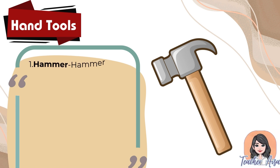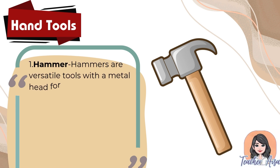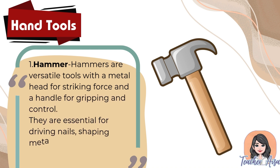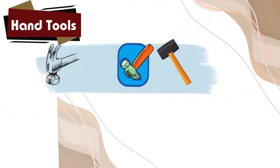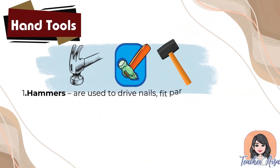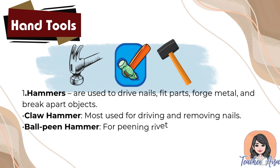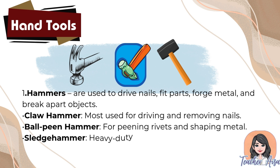First from the hand tools is the hammer. Hammers are versatile tools with a metal head for striking force and a handle for gripping and control. They are essential for driving nails, shaping metal, and breaking objects apart. Hammers are classified as: a) claw hammer — most used for driving and removing nails; b) ball peen hammer — for peening rivets and shaping metal; c) sledgehammer — a heavy-duty hammer for more significant tasks.